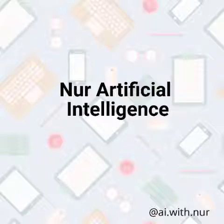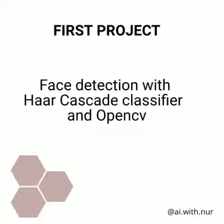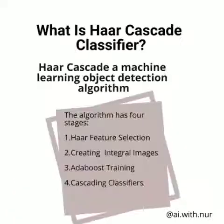Hello guys, welcome to AI with Node. Let's start our first project: face detection with the Haar Cascade algorithm and OpenCV. The Haar Cascade algorithm is a machine learning algorithm which is used to identify objects in images or videos.